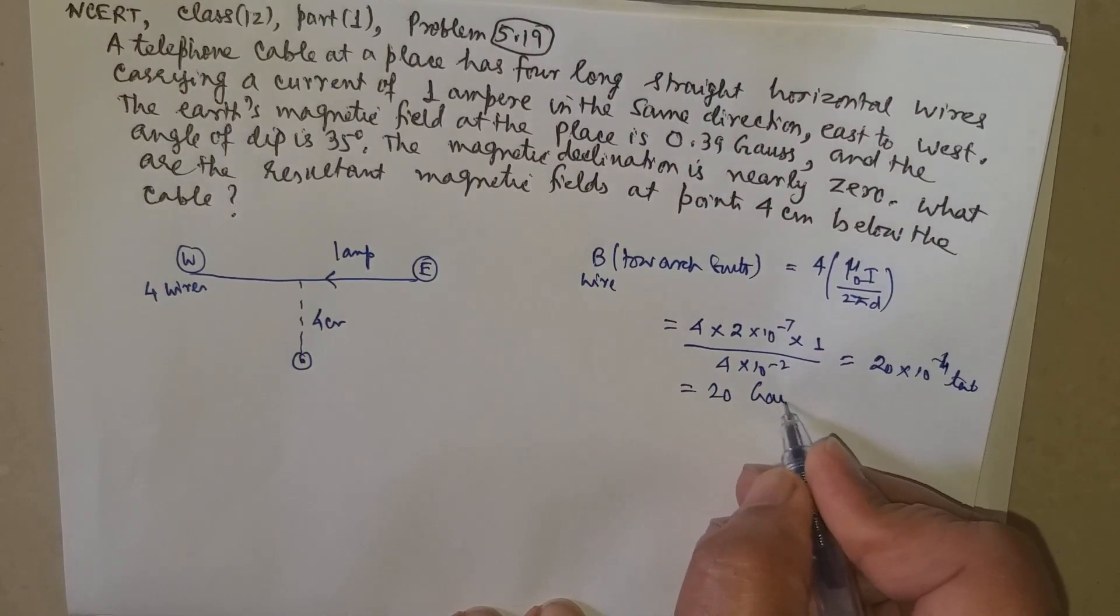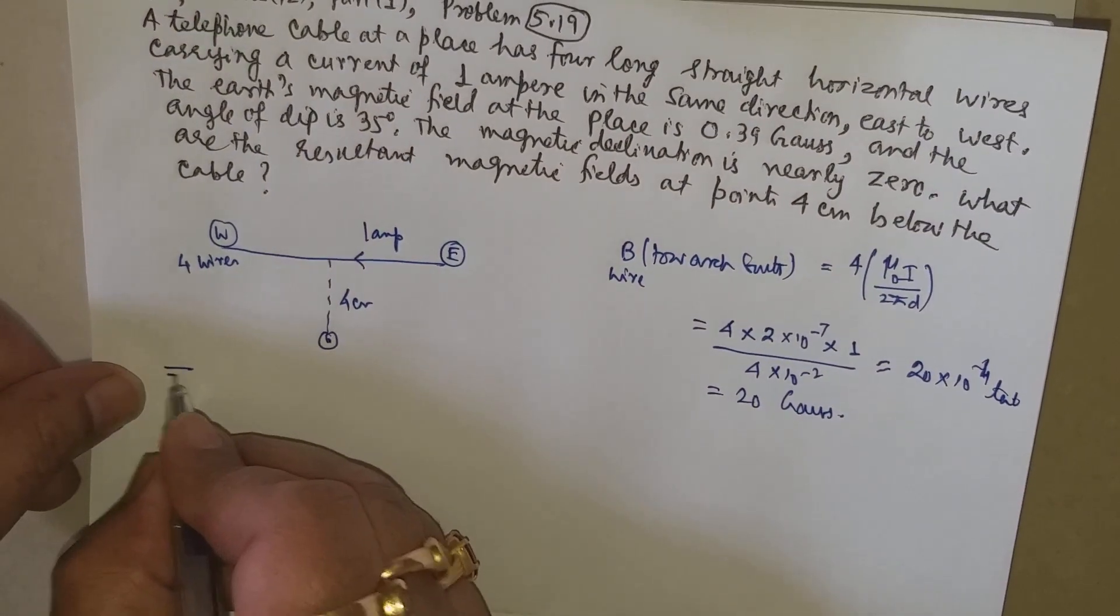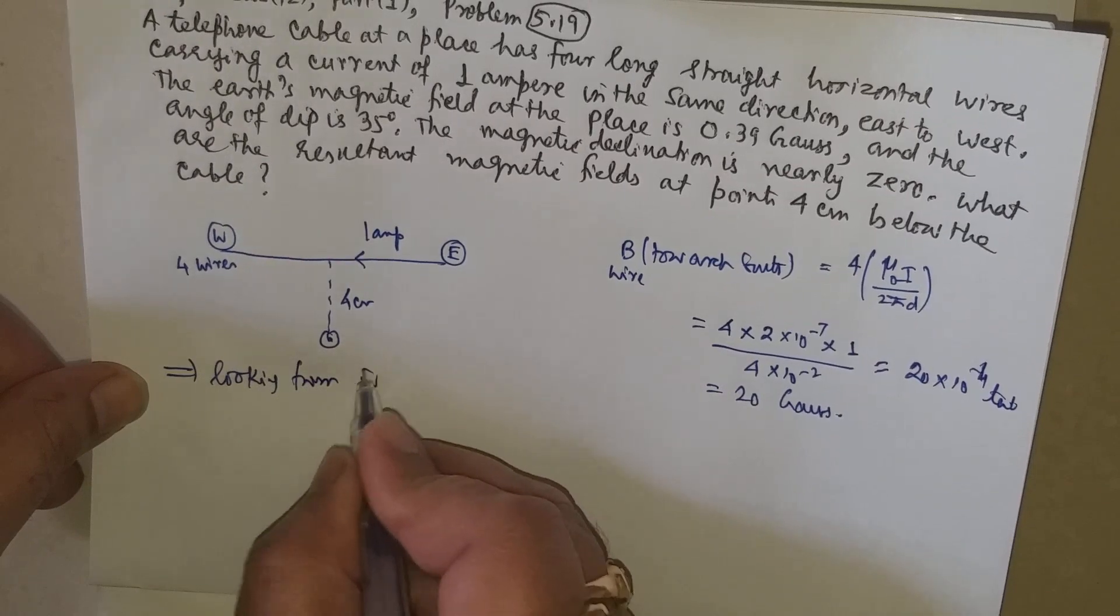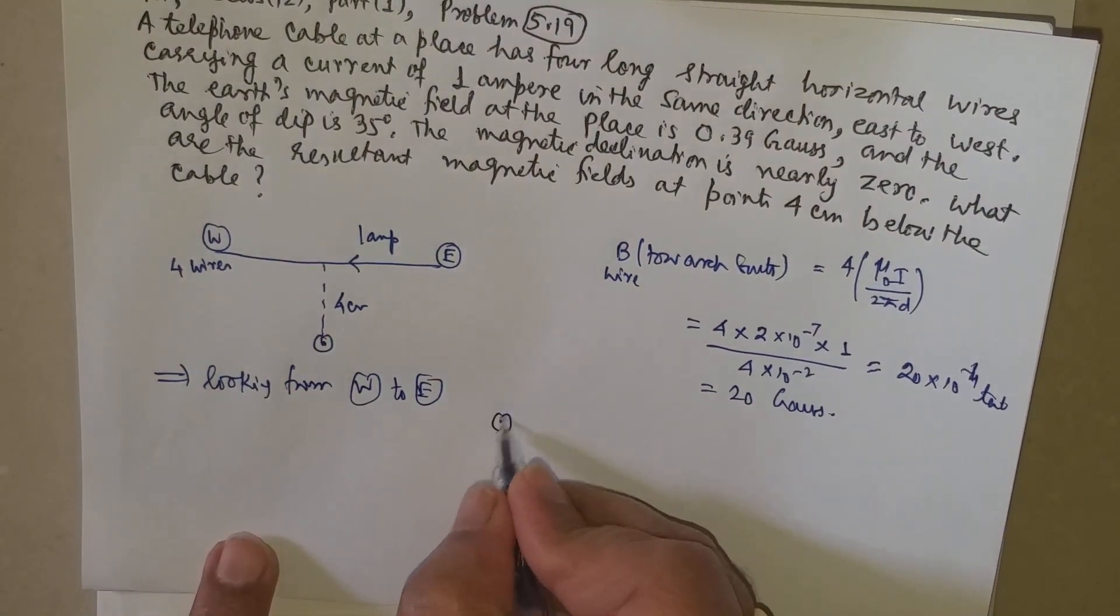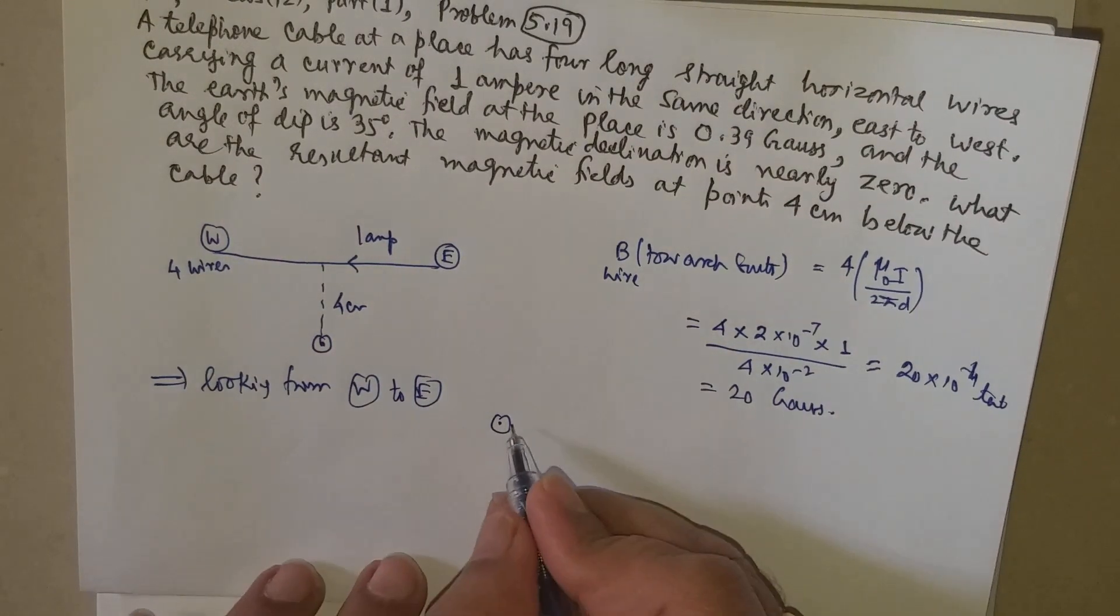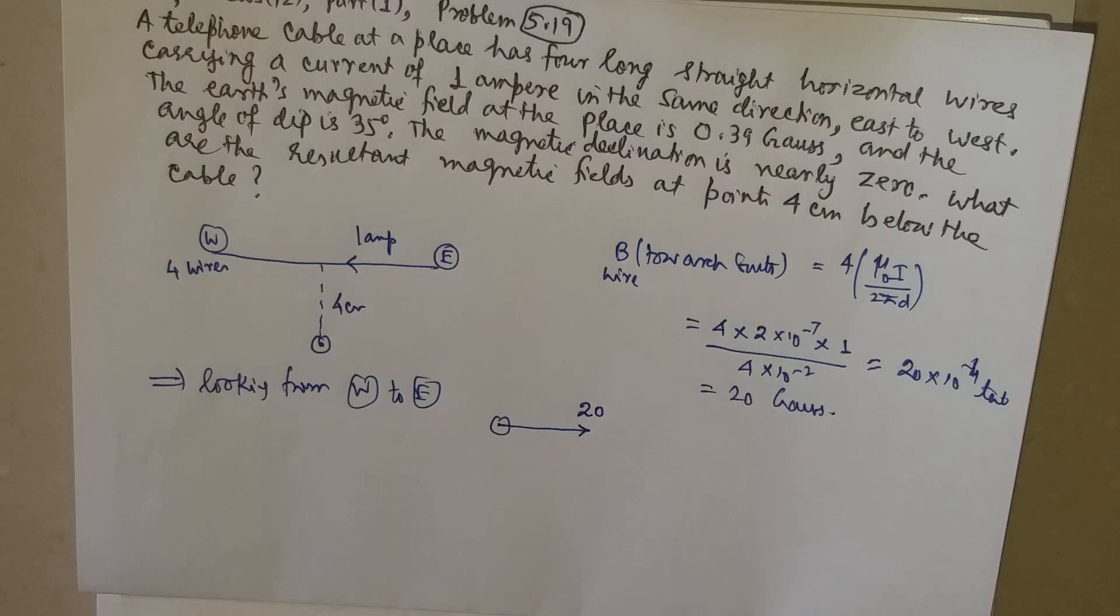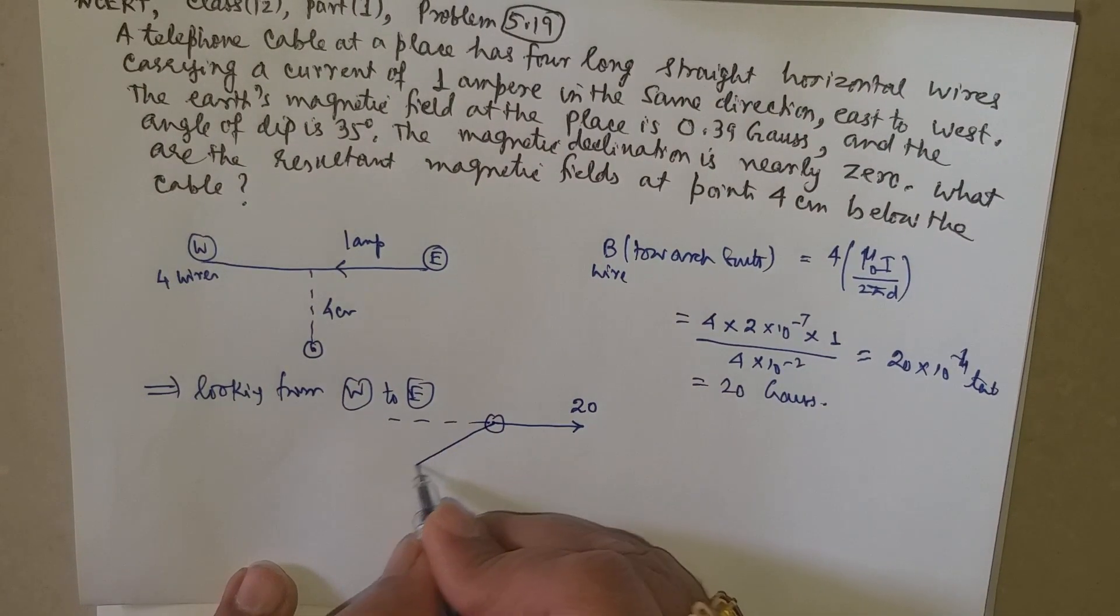Now if we look from this side, that is looking from west to east, so we are able to see this point. Our right side will be south, so this magnetic field due to the wire will be 20 gauss to the south.